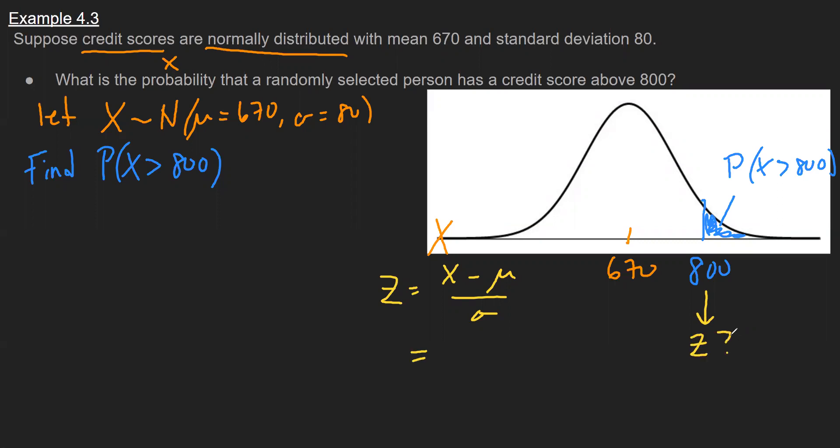So I'll just simply substitute my values. Our X that we're going to standardize is 800. The average was given as 670. The standard deviation is given as 80. And that tells me that this z value is 1.63.